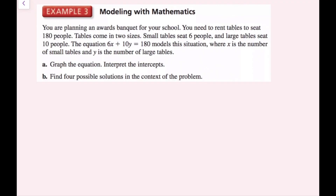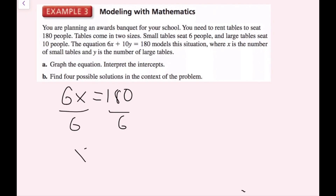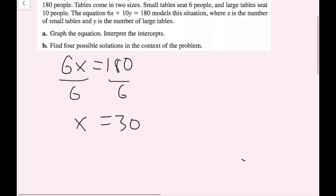To find the x-intercept, set y equals 0. Plugging in 0 for y, that whole term goes away, so 6x equals 180. Dividing both sides by 6, I get x equals 30. The corresponding point is (30, 0), and that's one of the points I'm going to plot.